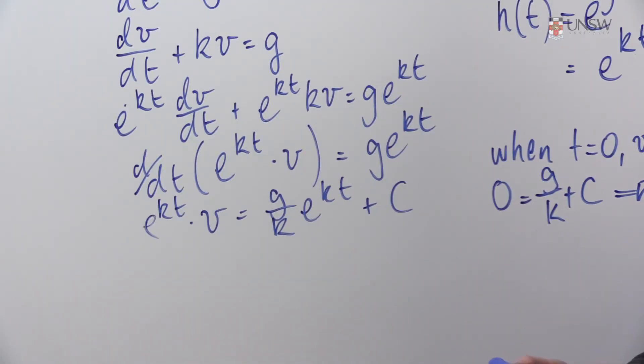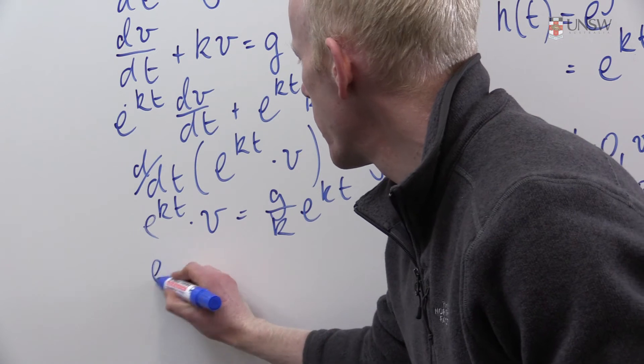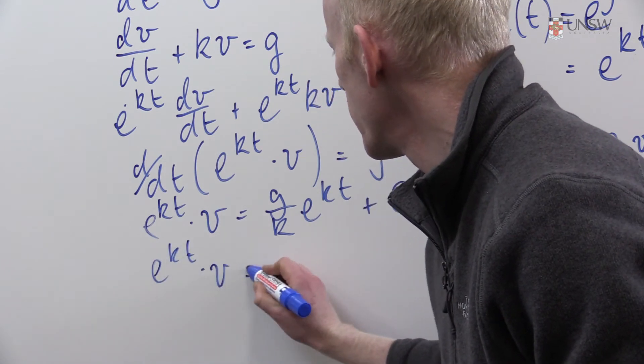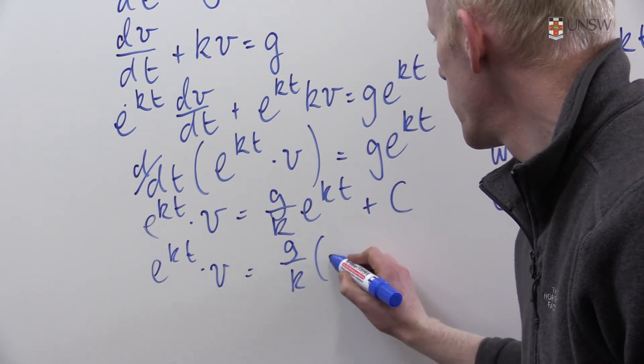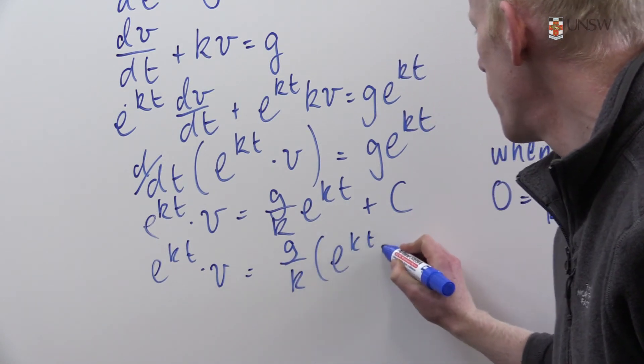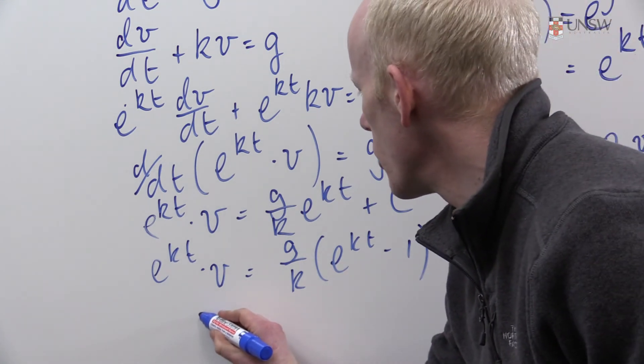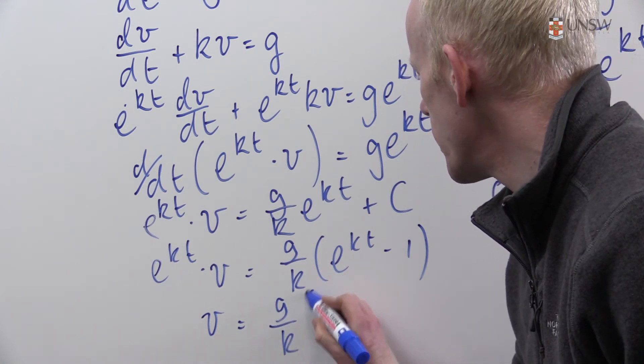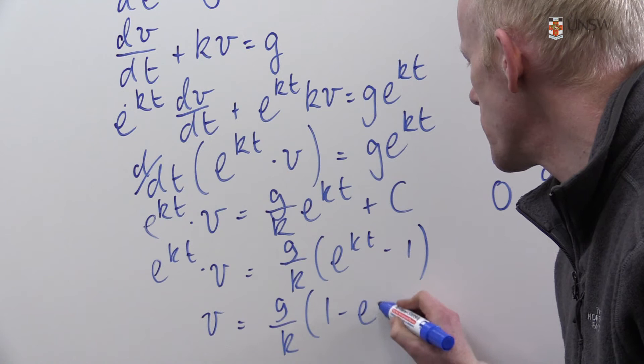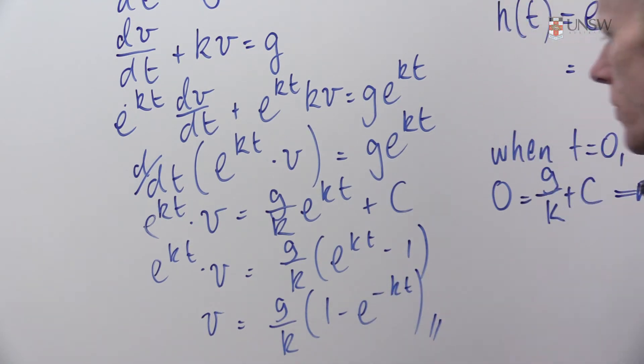At this point, I'll substitute my value for c into my equation. So I have e to the kt times v equals g/k times e to the kt minus 1. Tidying up and multiplying throughout by e to the minus kt, I get my expression for v as g/k times (1 minus e to the minus kt). I've now completed question part b.